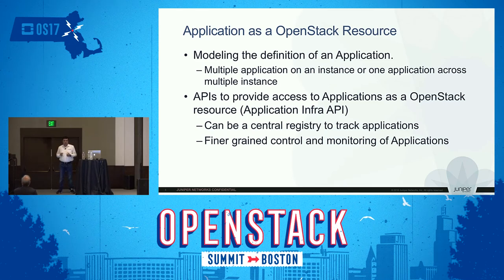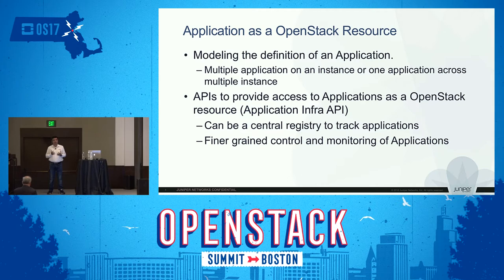To accomplish all of this, the first step is to look at the application as a resource itself. Today in OpenStack, we look at VMs or containers as resources. To help the application developer and understand the requirement of an application, we first have to model the application as an OpenStack resource. The definition of application itself can be very fluid — it can be one instance of a process running on one server, or multiple processes which communicate with each other, where the whole group forms an application.